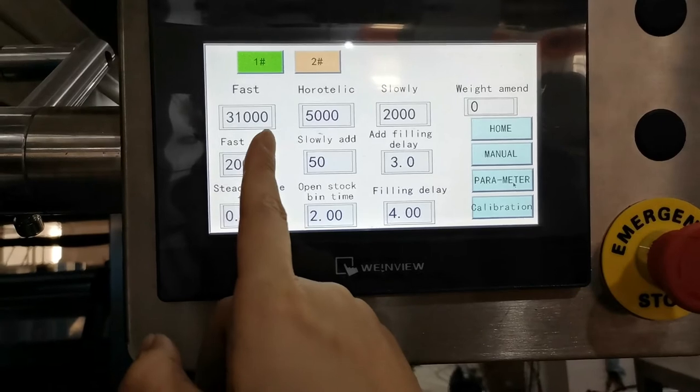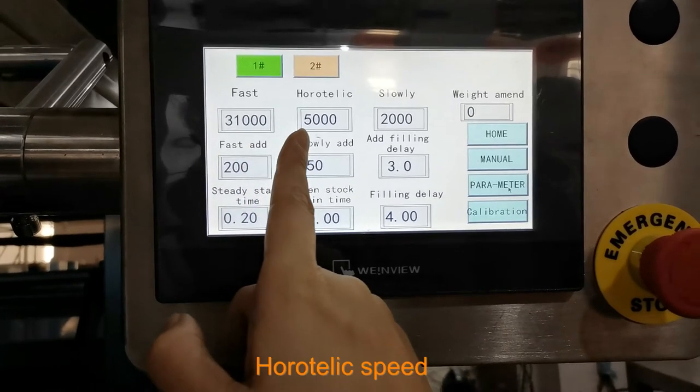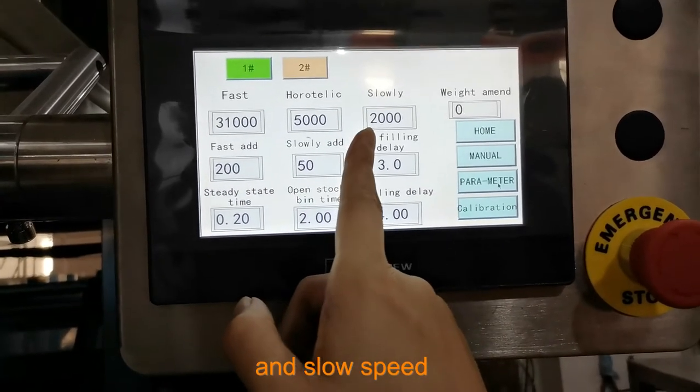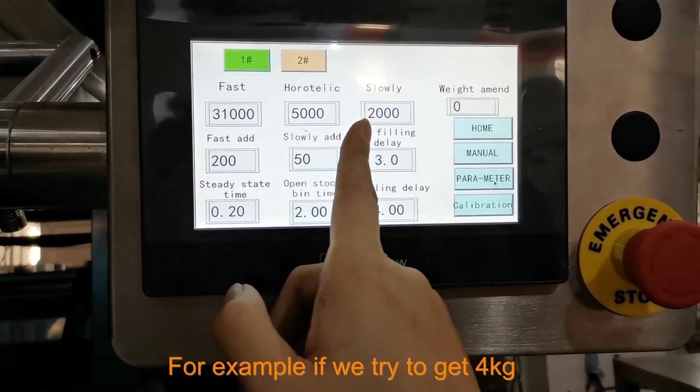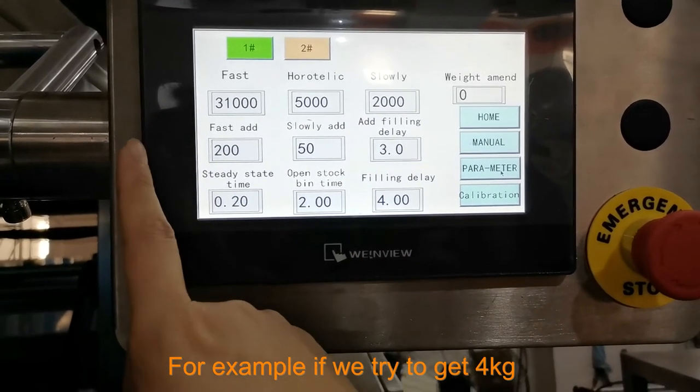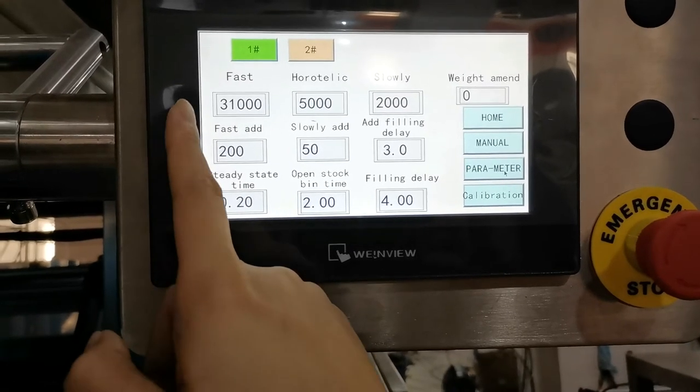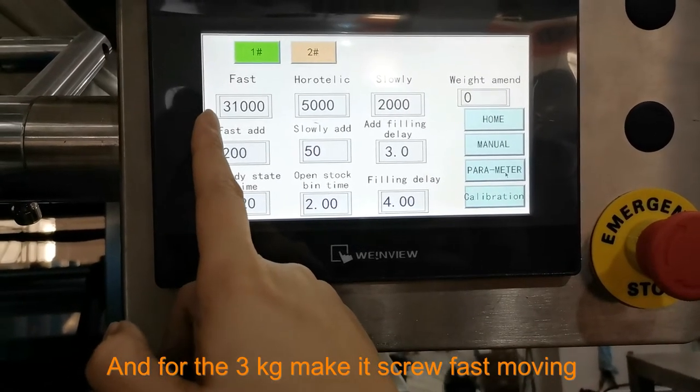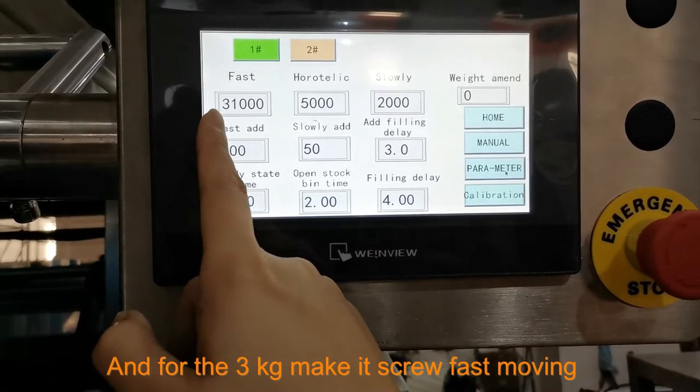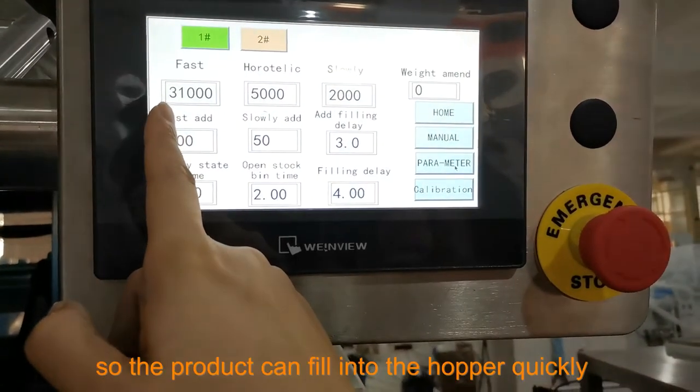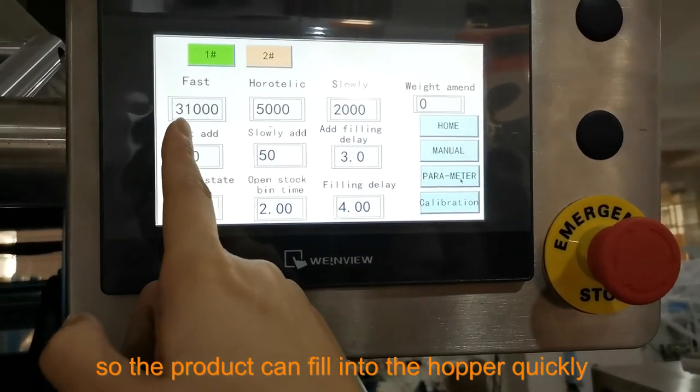For example, if we try to get 4,000 grams, for the 3,000 grams maybe we make the scale moving fast so the product can fill into the hopper quickly.